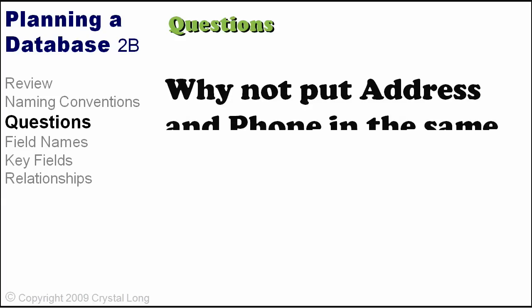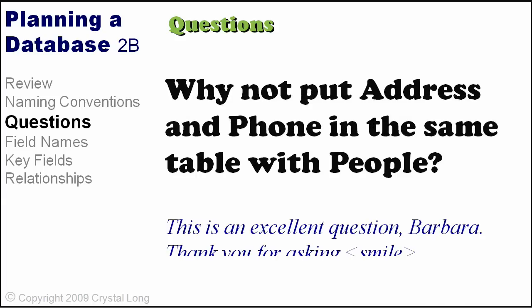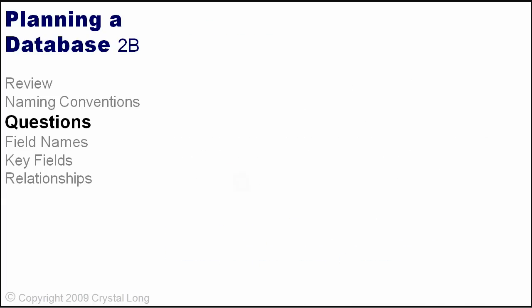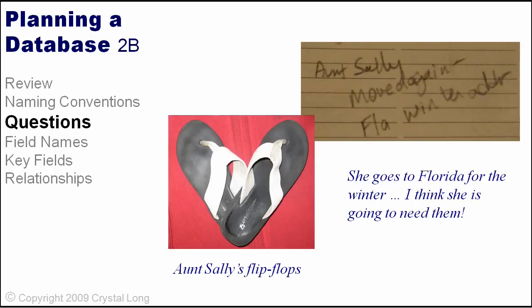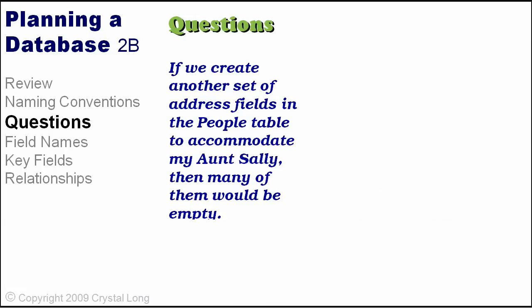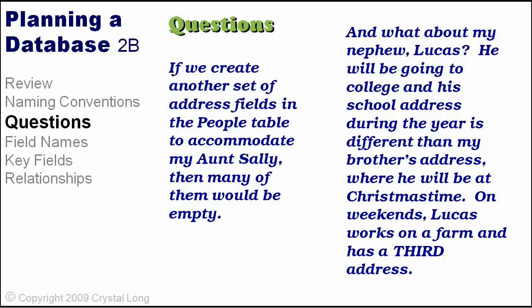Why not put address and phone in the same table with people? Let me tell you about my Aunt Sally. She lives in New York, but a few years ago she bought a beach house in Florida, so she has two addresses. If we moved address fields into the people table, we would either have to create two records for Aunt Sally — but she is one person and should have one record in the people table.